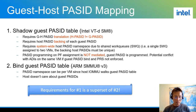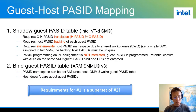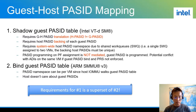Now we move on to guest and host PASID mapping. There are two main approaches to support guest PASID. The first is the shadowed guest PASID table, used by VT-d scalable mode. The second is to bind the guest PASID table, used by ARM SMMU version 3. Looking from the IOACID point of view, the shadowed approach requires a guest-host PASID translation, because the guest PASID may not equal the host PASID. It also requires every single guest PASID to have a host PASID backing.